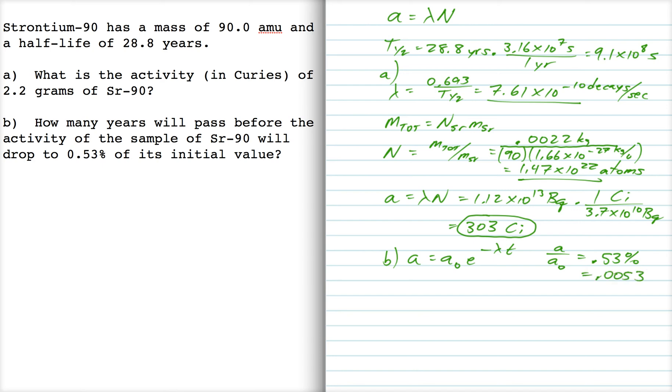Okay, so I'm going to set 0.0053 equal to e to the minus lambda t. And so if I take the natural log of both sides, I get minus 5.24 is minus lambda t, so t is equal to negative 5.24 over negative lambda. I'm going to use my lambda from up here, 7.61 times 10 to the minus 10 decays per second.